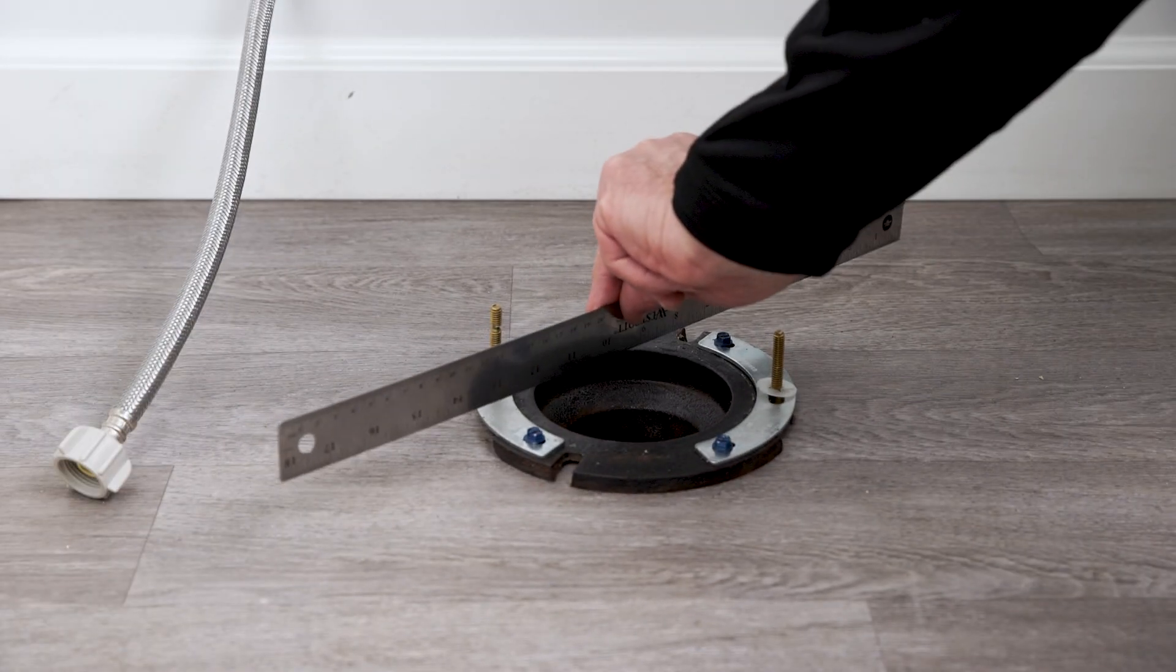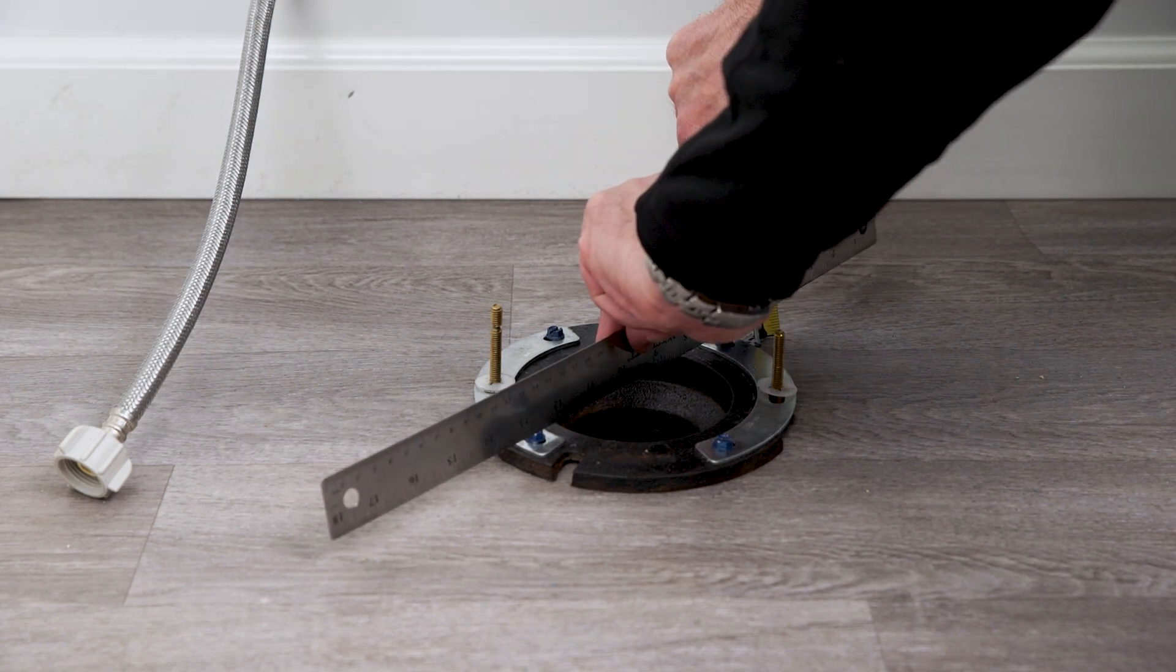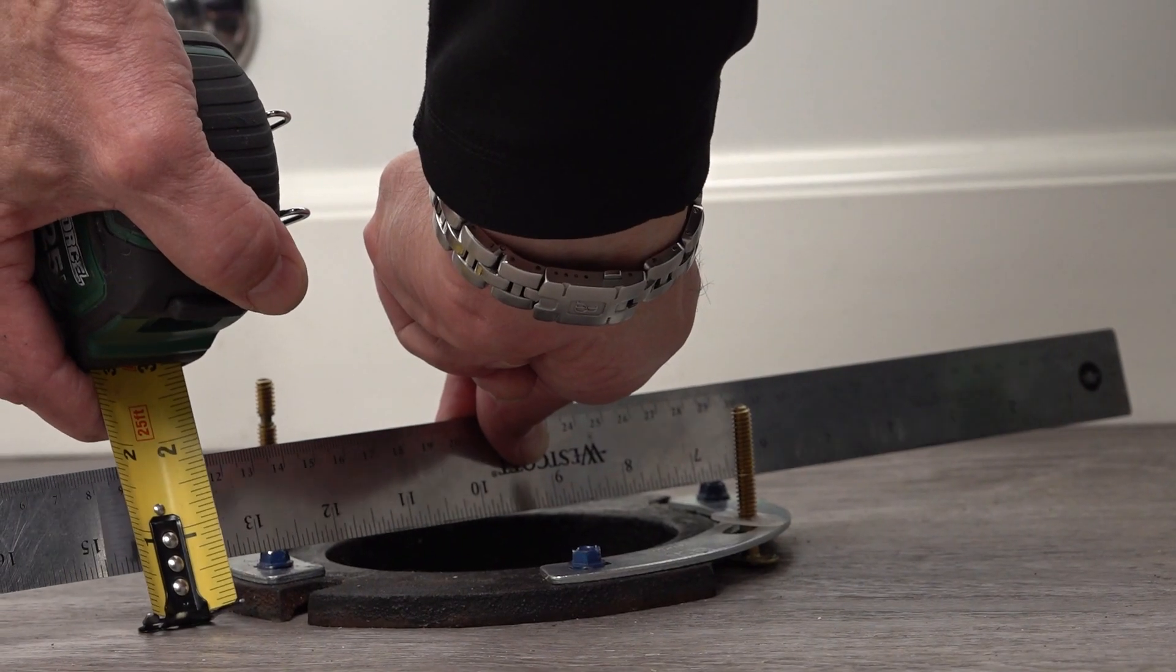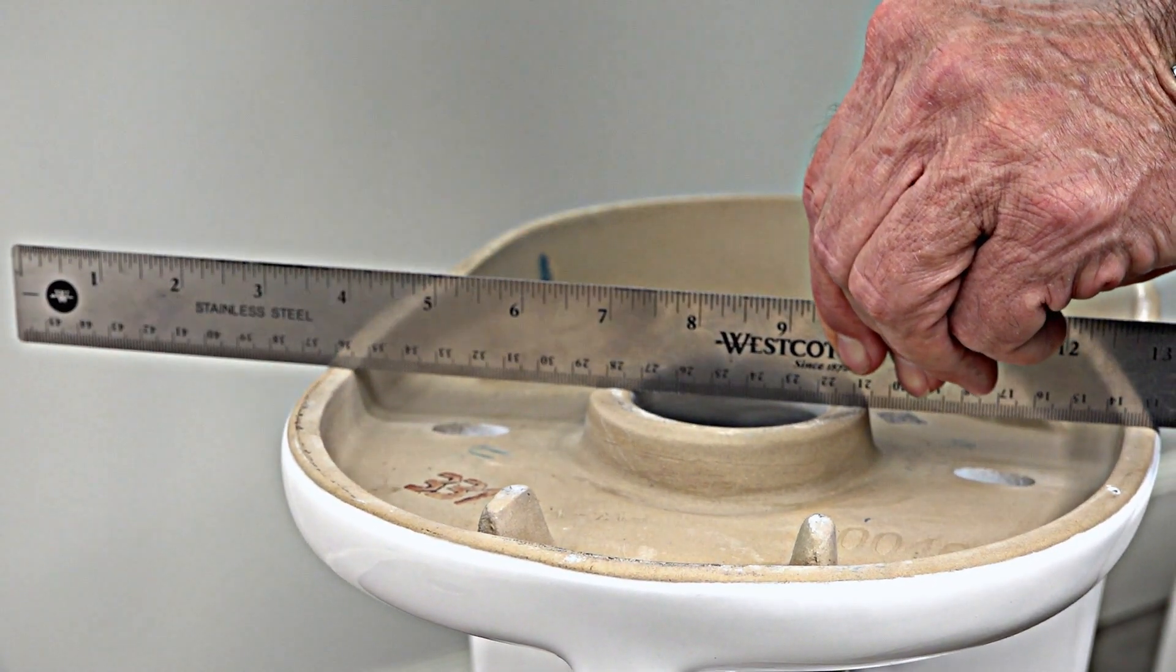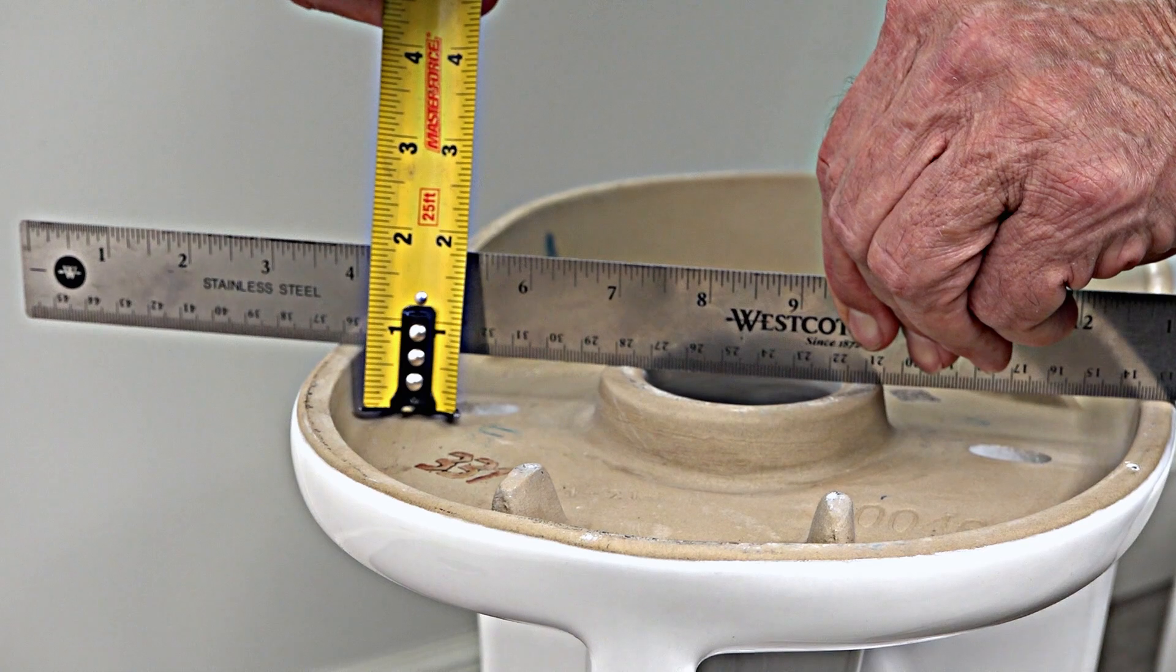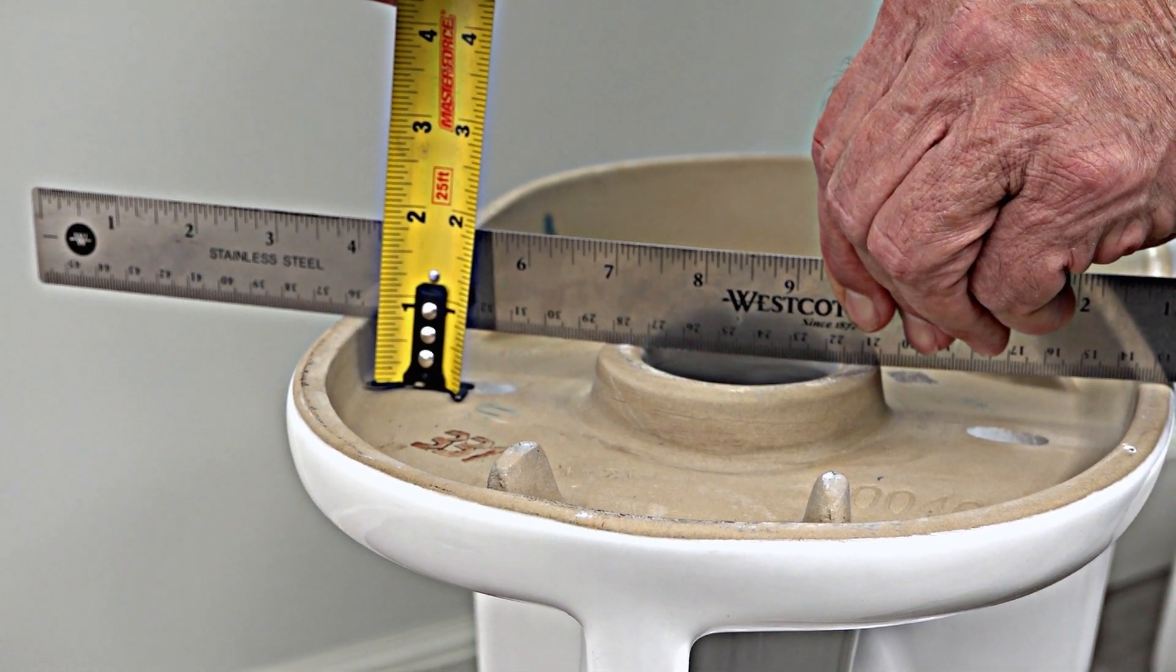Place a straight edge across the highest point of the installed fix-a-flange kit and measure from the floor to the bottom of the straight edge. Place the straight edge across the bottom of the toilet and measure from the recess in the toilet to the bottom of the straight edge.